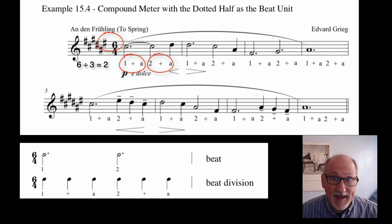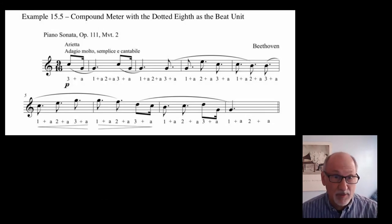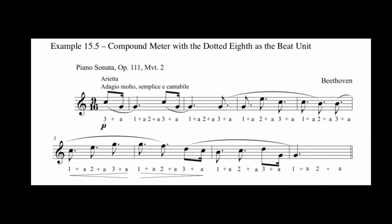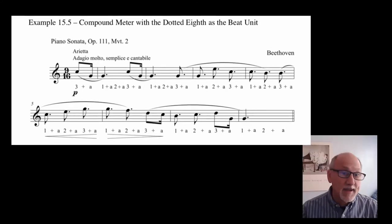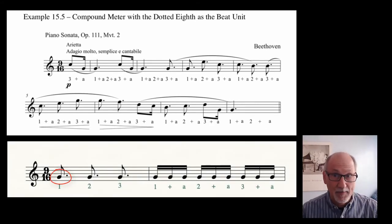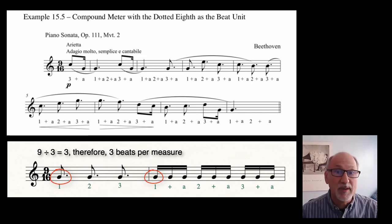Here's an example of compound meter with a dotted eighth as the beat unit. This is from the Piano Sonata Op. 111, Movement II by Beethoven. [Music plays] In the 9-16 meter of this example, the dotted eighth note gets the beat, and the sixteenth note is the beat division. As with all compound time signatures, divide the top number by three, and you will discover the number of beats per measure. This is also clearly indicated in the counts beneath the music.